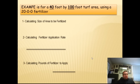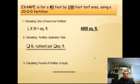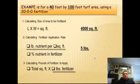Looking back in summary of this exercise, we took an example of a 40-foot by 100-foot turf area using a 20-0-0 fertilizer. First, we calculated the size of the area, which is basically length times width to find square footage, and we found that the total area we're working with is 4,000 square feet. In the second step, we calculated the application rate—remember that's usually a given—and we used one pound per 1,000 square feet and came up with five pounds per 1,000 square feet.